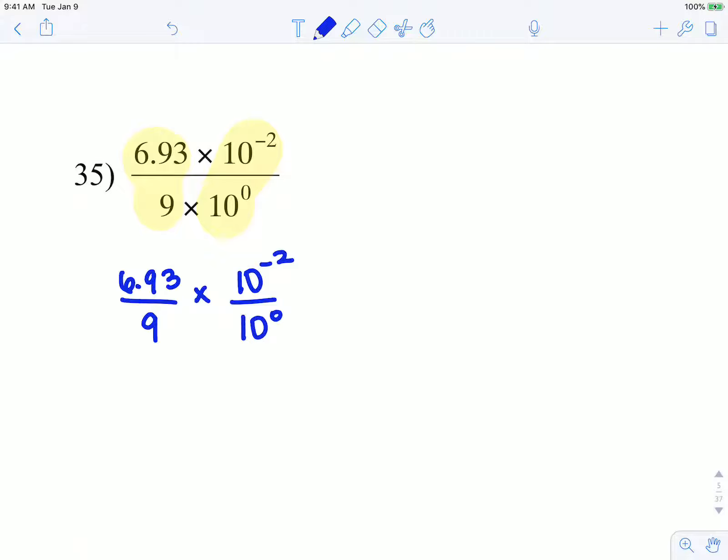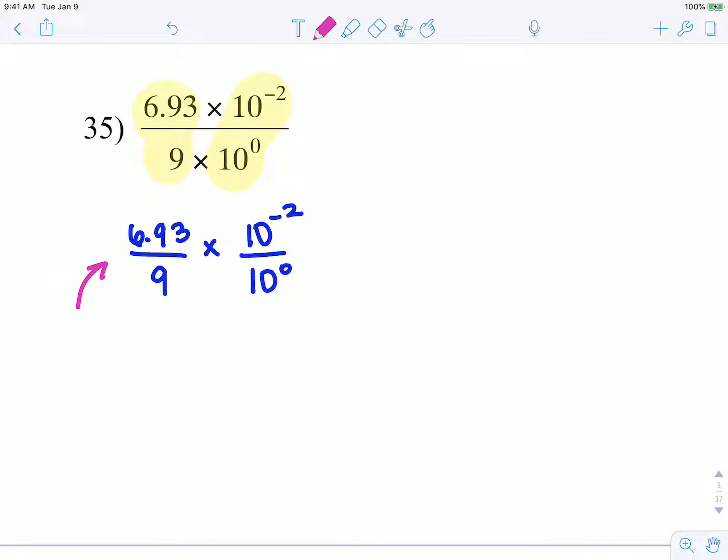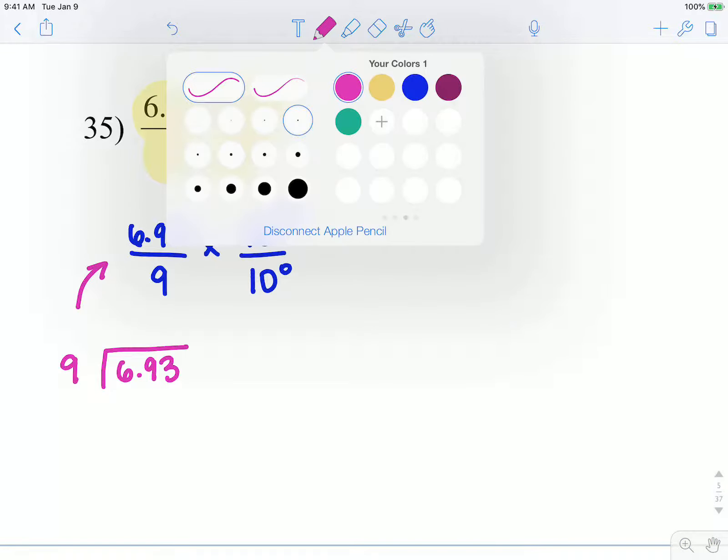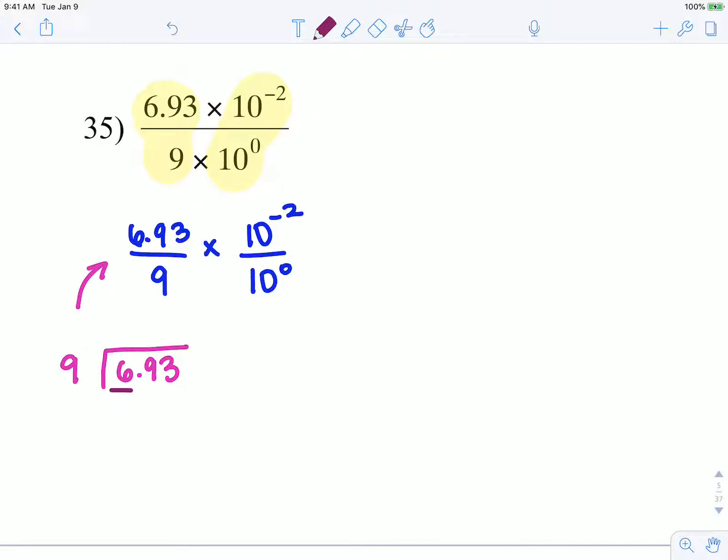So now I need to simplify 6.93 divided by 9, and we can do that using long division. 6.93 is being divided by 9. Nine goes into 6 zero times, zero times 9 is zero, subtract we get 6, drop the 9.